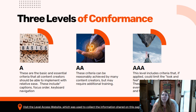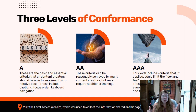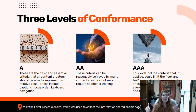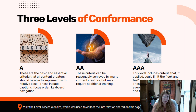There are three levels within WCAG. The first level, A, is the most basic. These are the features that most content and web creators can implement with relative ease. Some of these standards include closed captions, focus order, and keyboard shortcuts.